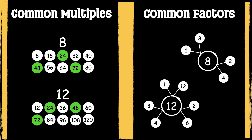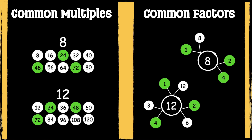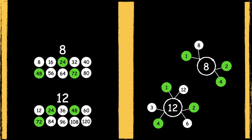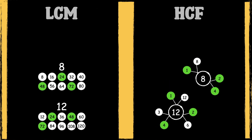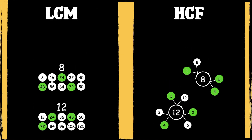The common factors are 1, 2 and 4. So we can see that the lowest common multiple of 8 and 12 is 24, and the highest common factor of 8 and 12 is 4.